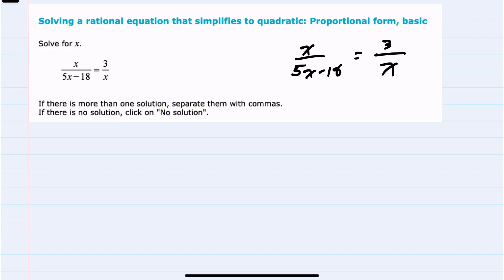In this example, I want to have a process that I can use in multiple situations, and I want to remove these fractions to make it easier to solve. The way that we do that is to identify the lowest common denominator between our two denominators here. Our lowest common denominator would have to have a 5x minus 18 term and an x term.